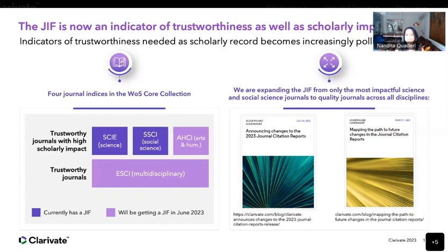On the left of this slide you'll see a representation of the four journal indices in the Web of Science. To enter the multidisciplinary ESCI index, which was launched in 2015, journals must meet our 24 quality criteria, and less than 20% of journals pass this step. On the top row, we have the three discipline-specific indices — SCIE, SSCI, and AHCI — and to enter these, journals must pass our quality criteria but also our four impact criteria. Until this year's JCR release, only journals in SCIE and SSCI were eligible to have a JIF. From now on, journals in ESCI and AHCI are also eligible to receive a JIF.